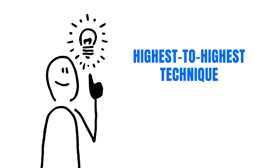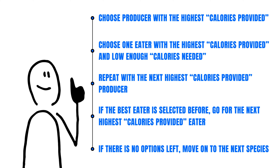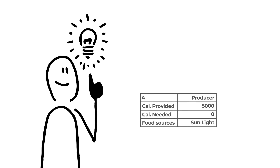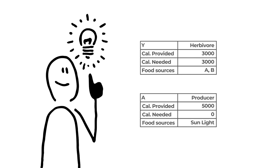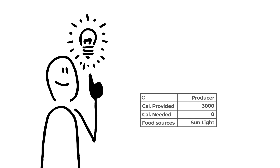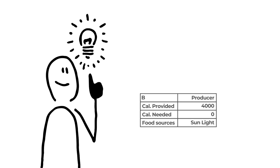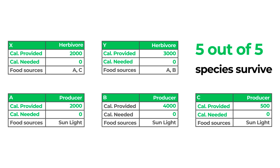To avoid this, you can use what I call the highest-to-highest technique. You start from the producer with the highest calories provided, choose the one eater with the highest calories provided but calories needed low enough to not exhaust the producer. Then move to the producer with the second-highest calories provided and do the same — with the caveat that if the best eater is already selected, you go for the one with the second-highest calories provided. If there are no eligible options, move on to the next species without selecting anything. Applying this to the ABC example: start with producer A (highest calories provided), match it with species Y (its eater with highest calories provided). Then move to C and pick X as its eater. Z cannot fit in because its place is taken by X. We end up with five species — fewer than six, but now all five survive instead of only four.